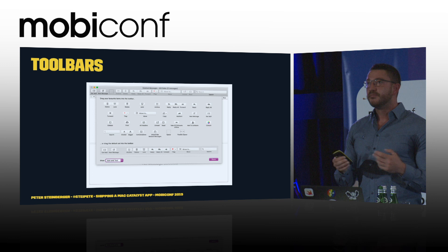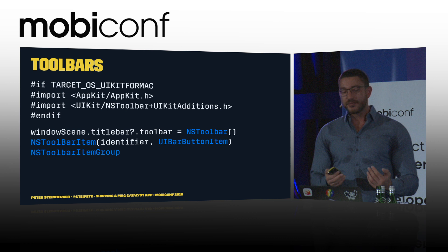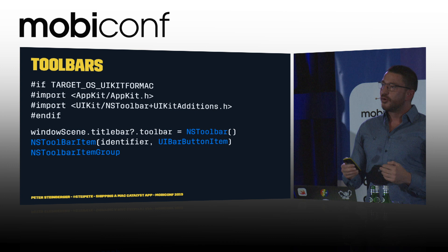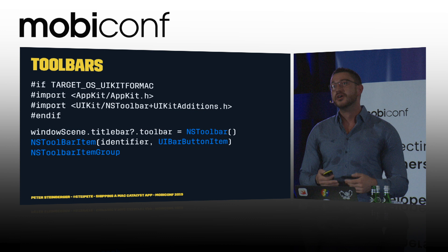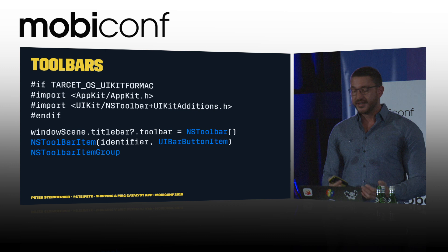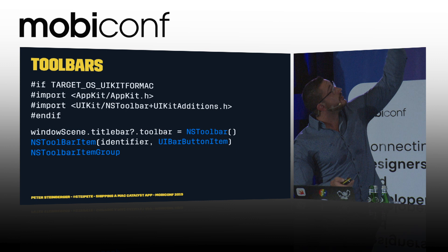Apple did realize this and blurred the borders a little bit, so we got a little bit of AppKit. You can actually import AppKit, and there's even something called NS toolbar with UIKit additions. The bridging code is Objective-C, because importing it directly in Swift has some problems. Apple's recommendation is to use a bridging header, and then you can use Swift to work with NS toolbar, NS toolbar item, and NS toolbar item group just as you would in AppKit. Also note: they forgot to rename the macro in Objective-C, so up there it's still called UIKit for Mac.